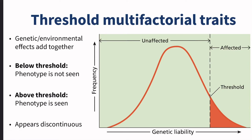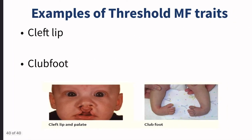There are also a type of multifactorial traits called threshold multifactorial traits. What that means is that you have to hit a threshold of genetic liability for the phenotype to be seen. If you don't hit that threshold, like over in this side of the graph, that phenotype won't be seen at all. It seems like a discontinuous trait because it seems like there are just two distinct phenotypes, but there's not. It is a multifactorial continuous trait — there's just a threshold for the phenotype to be seen at all, and there could even be a range within that upper threshold. Examples of this would be cleft lip and club foot.